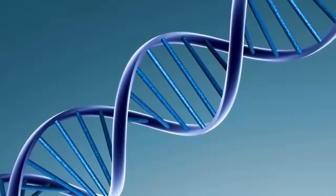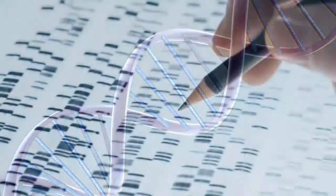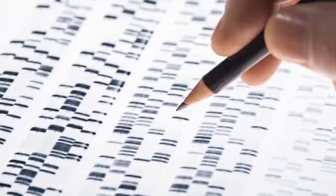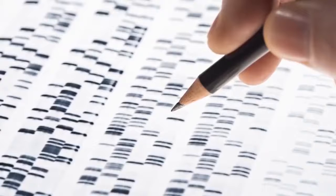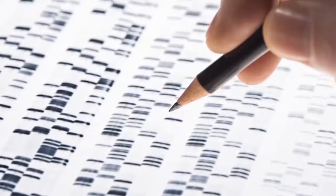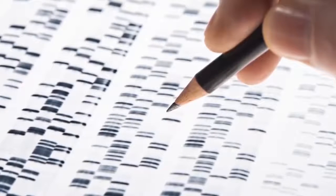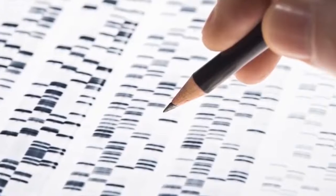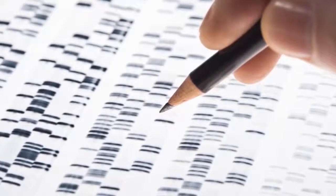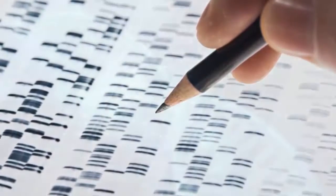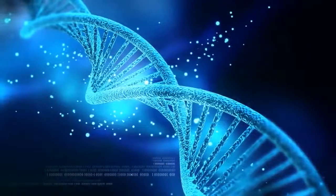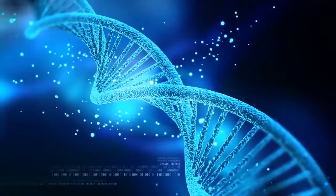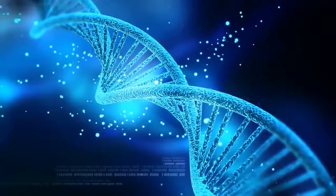Has evolution given us a brain that takes shortcuts, convenient shortcuts, in order to rapidly assess dangerous situations? Or is what we see really reality? Today we're going to ask the question, does the brain take shortcuts and give you an abridged, simplified version of reality? So what you see is not really what you get, and seeing is not really believing.